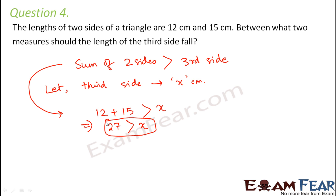Is there any minimum value of x that is also needed? Of course there is a minimum value as well. The three sides would be 12, 15, and x. The way 12 plus 15 should be greater than x, in a similar way 12 plus x should also be greater than 15, because sum of any two sides should be greater than the third side. From this you can say that x should be greater than 15 minus 12, or x should be greater than 3.